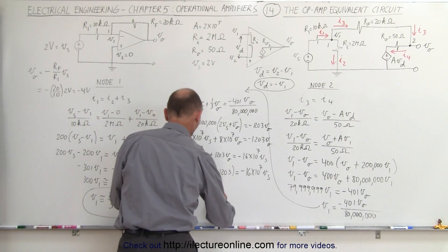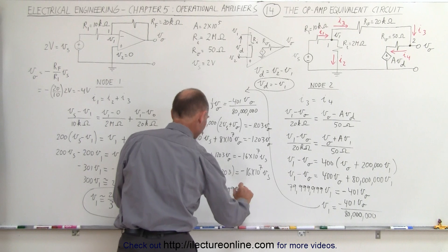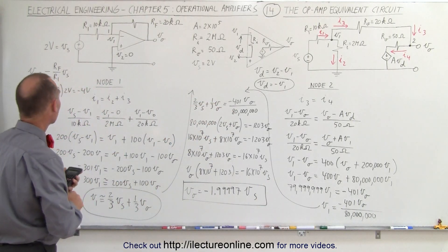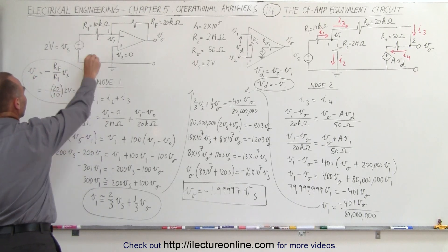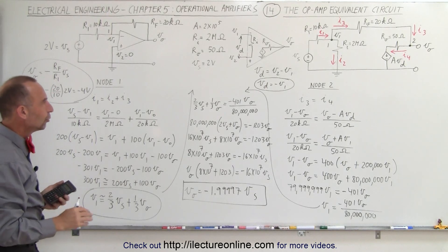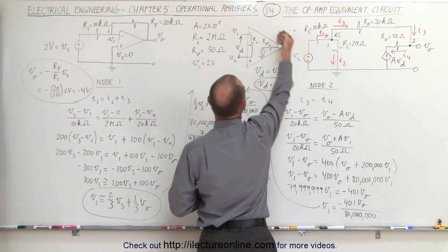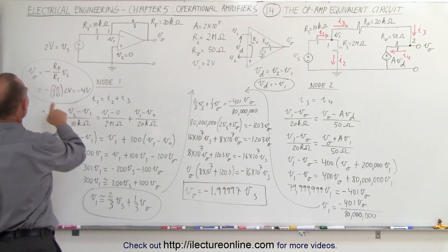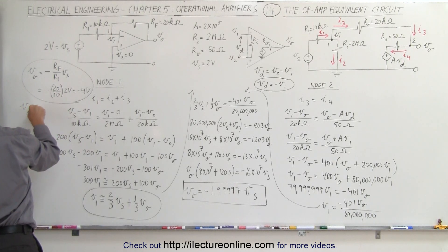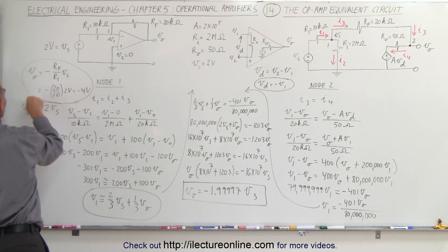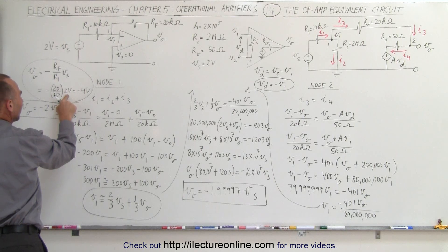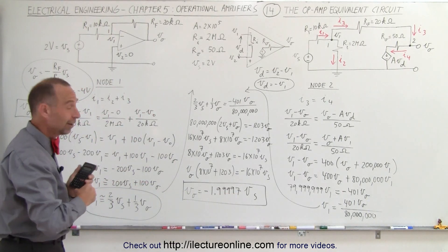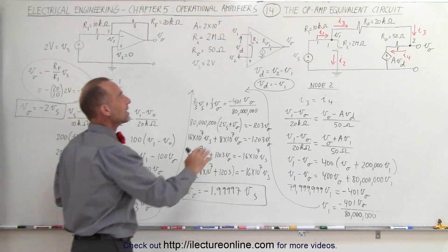That is what we were after. Comparing the two results: using the ideal op-amp circuit, V_O equals minus 2·V_S. Using the full equivalent circuit — accounting for internal resistance and internal current — V_O equals minus 1.99997·V_S. The answers are essentially identical.